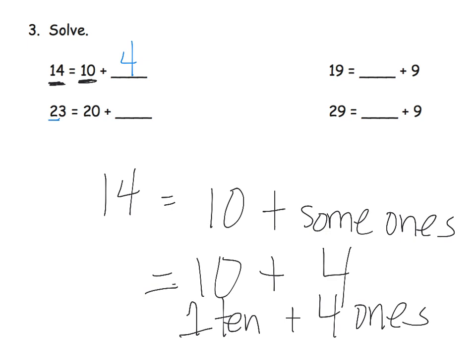Similarly, 23 is two tens plus three ones. So here's our two tens, which means we're missing three ones. And way over here, we're just kind of practicing the same concept, only now they're moving around where that blank space is. We can see that here we're missing a 10, because 19 is a 10 plus nine ones. So there's our 10 plus nine ones, and here we're missing a 20.